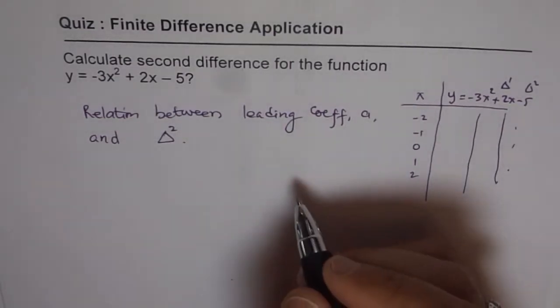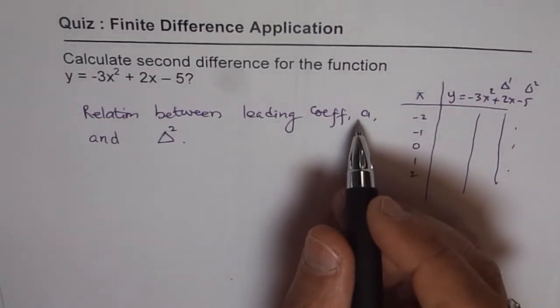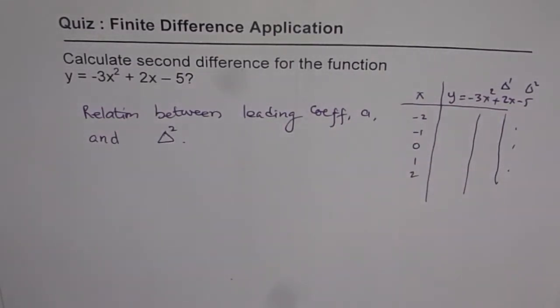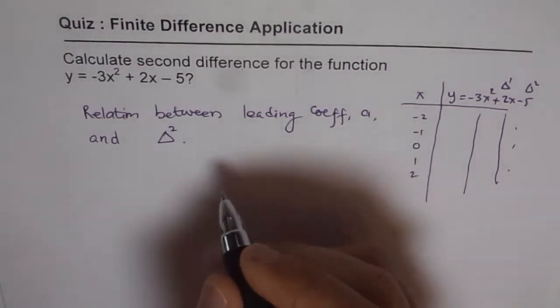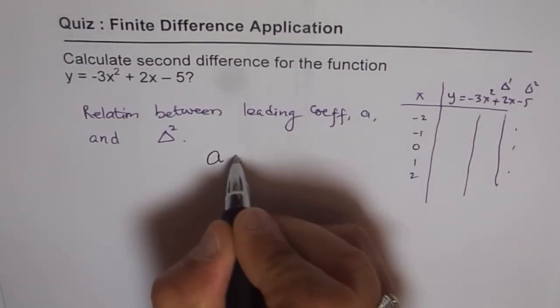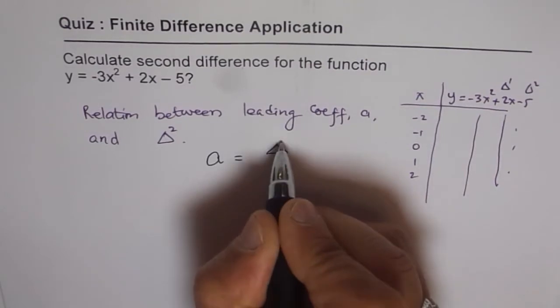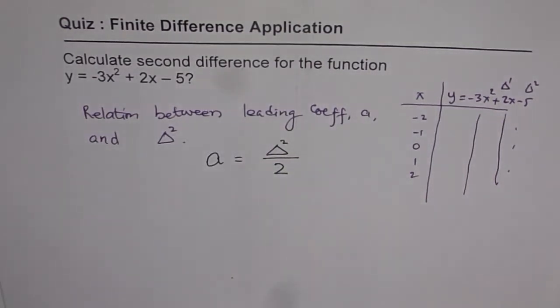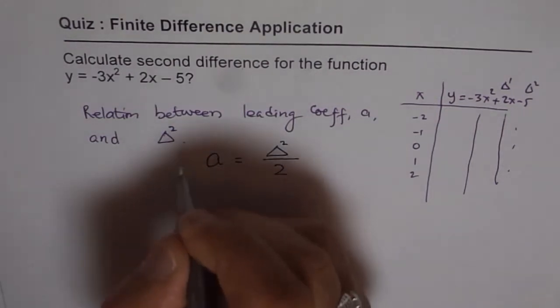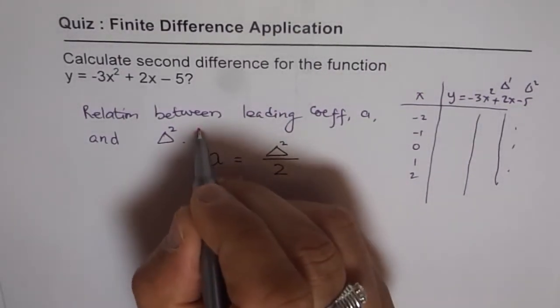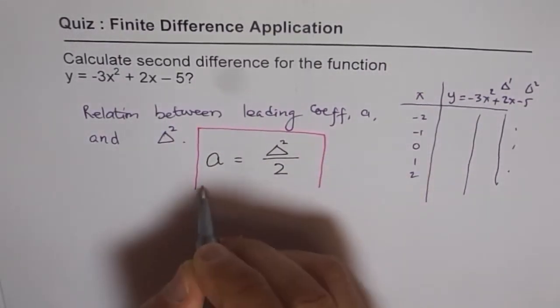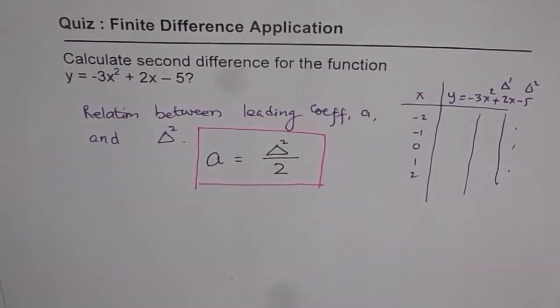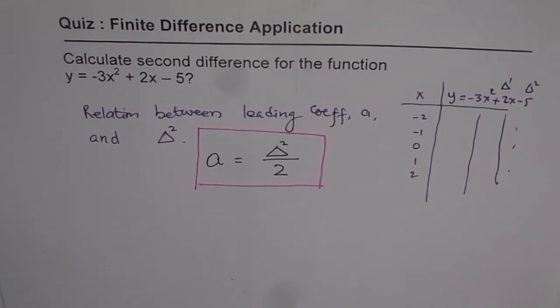Now second difference is related with leading coefficient and the relation is, let me write it big and bold here. The relation is that A is equal to second difference divided by 2. So that is the relation which you have to remember. And you kind of know it but you need to register it. So A the second difference, A is equal to second difference divided by 2.